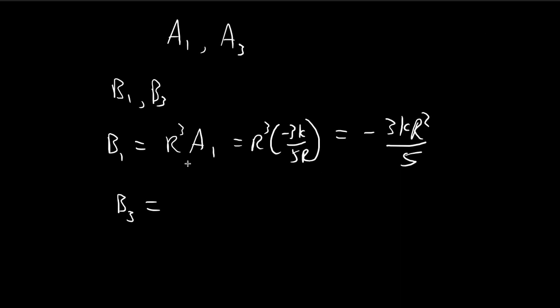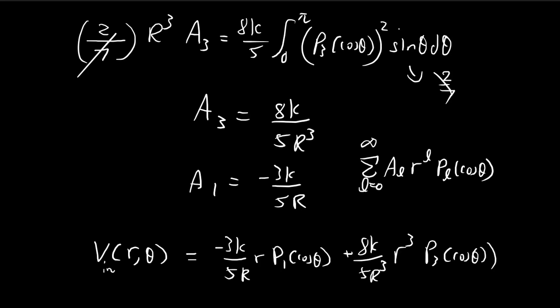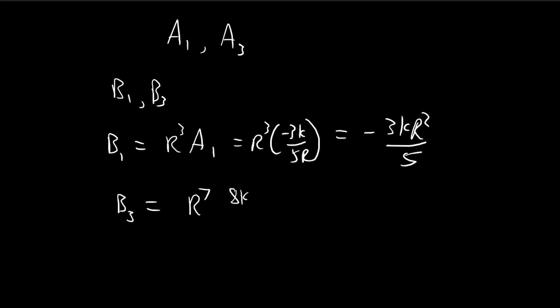And doing the same thing, L equals 3, that's going to be 2L+1 equals 7. And then A3 is equal to 8k over 5r to the power of 3.